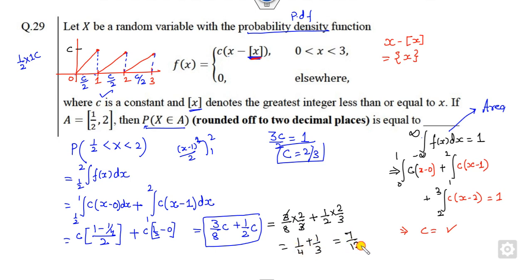So it is 1 by 4 plus 1 by 3, so it is 7 upon 12. So what is the right answer of this problem? 7 divided by 12, or you can say it is 0.58 is the correct answer up to 2 decimal.